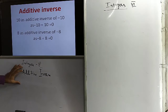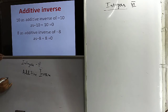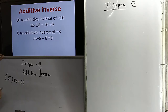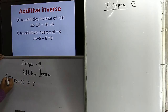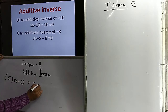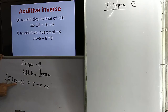Let us see what is the meaning of additive inverse. If 5 is there and we add minus 5, then 5 plus minus 5 is 0. So 5 and minus 5 are the additive inverse of each other.